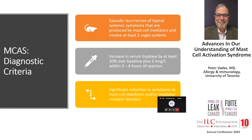Let's turn to diagnostic criteria for mast cell activation syndrome. There are three criteria that must be fulfilled. The first is that a person experiences typical systemic symptoms characteristically produced by mediators from mast cells, often involving two or more organ systems — for example, flushing and hives together with crampy abdominal pain and diarrhea.